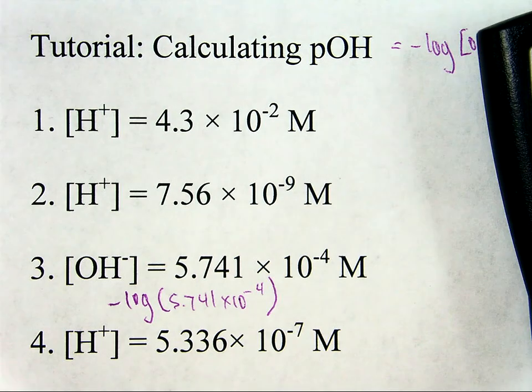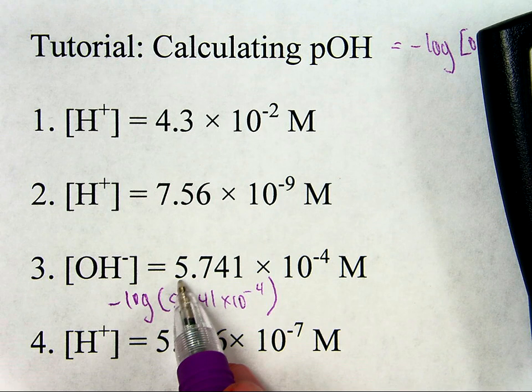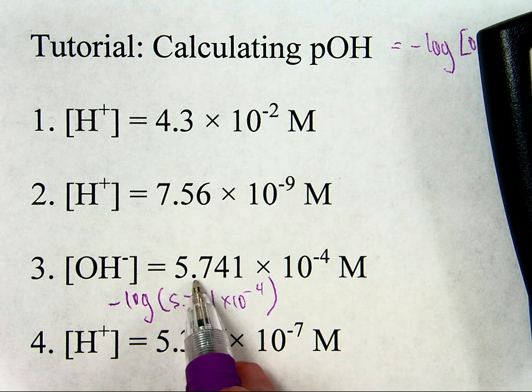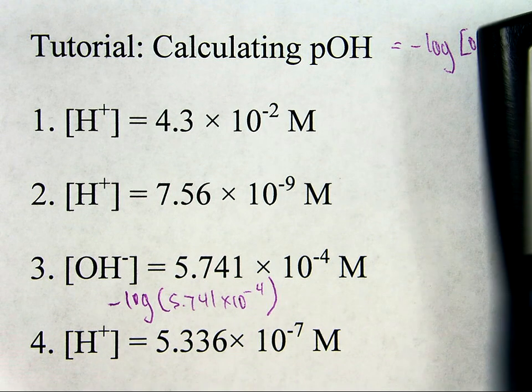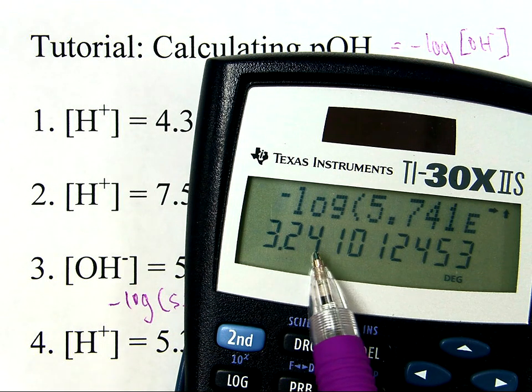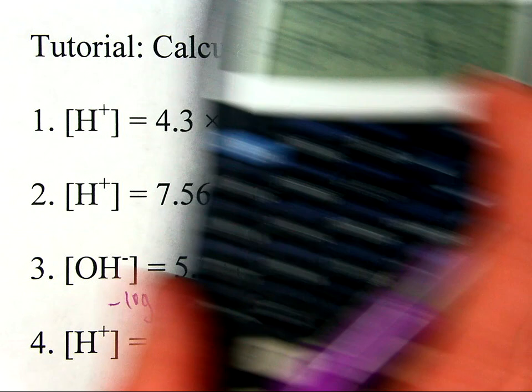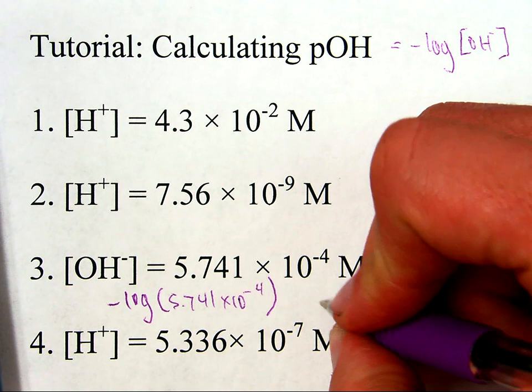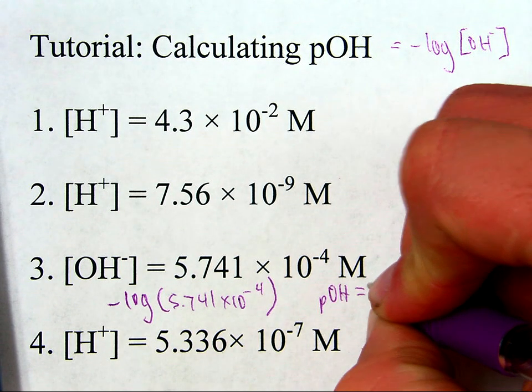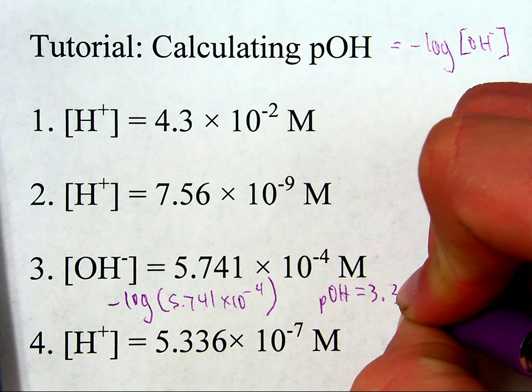Now, looking at the original number, there's no addition or subtraction, so sig figs are 1, 2, 3, 4 sig figs. 1, 2, 3, 4 sig figs, 3.241. So, pOH equals 3.241. It's as simple as that.